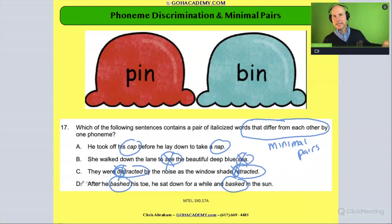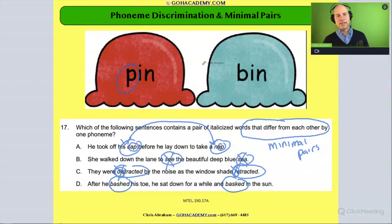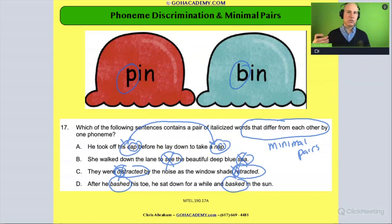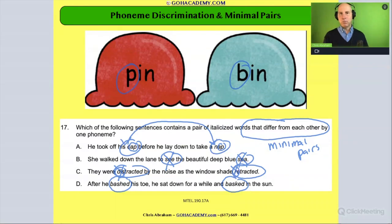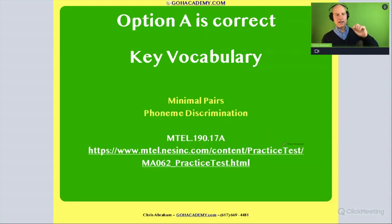So is it A ('nap' and 'cap') or D ('bashed' and 'basked')? 'Nap' has three sounds and 'cap' has three sounds. They share the rhyme '-ap' and differ only by that initial phoneme — just like 'pin' and 'bin.' These simple words are ideal for testing phoneme discrimination because they're not overly complicated. The answer is A — 'nap' and 'cap.'